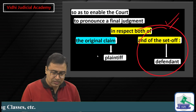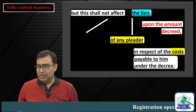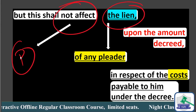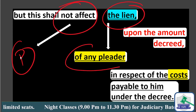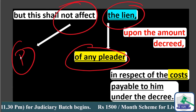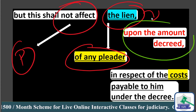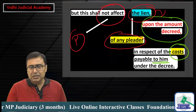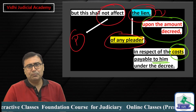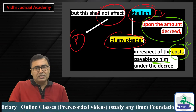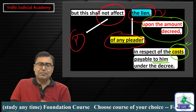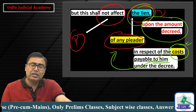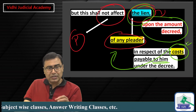This is up to Rule 6. Now the concluding part — this shall not affect the lien of the pleader, meaning the lawyer's lien. The lien is upon the amount decreed in respect of the costs payable to the pleader under the decree. It means if the decree provides for costs payable to the pleader, their lien on that decreed amount will not be affected by the set-off rule.